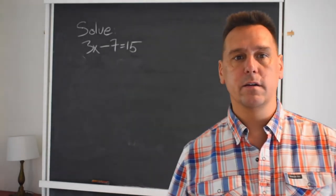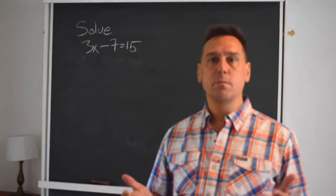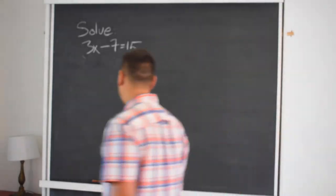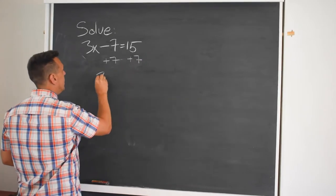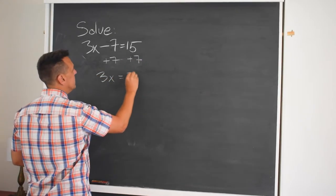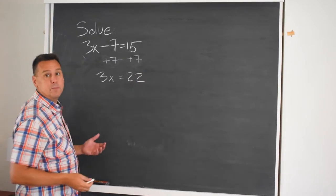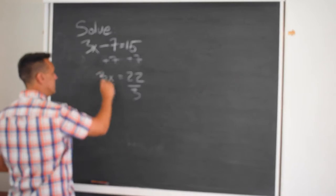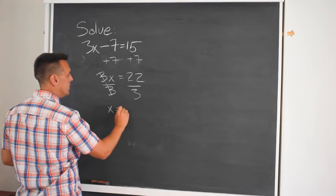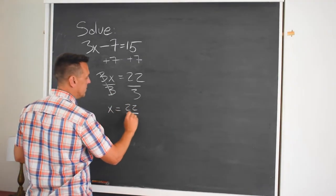The first step for this problem would be to move 7 to the other side. You're adding 7 to both sides. We end up with 3x equals 22. The next step would be to divide both sides by 3.